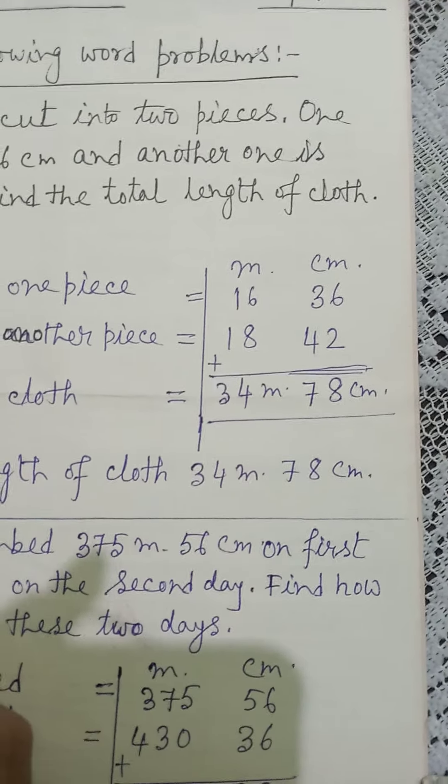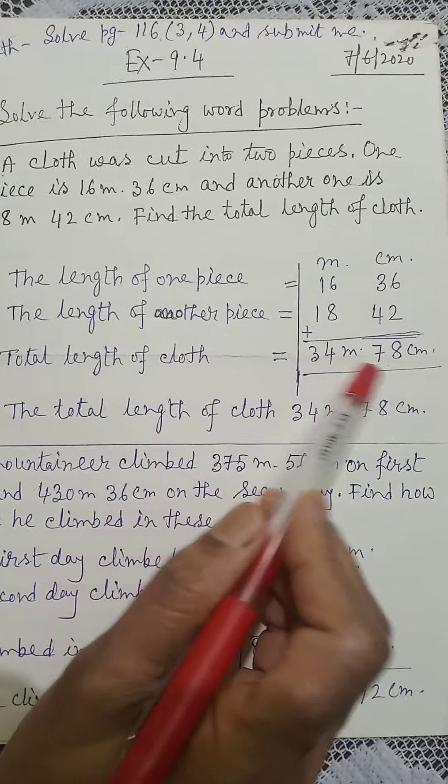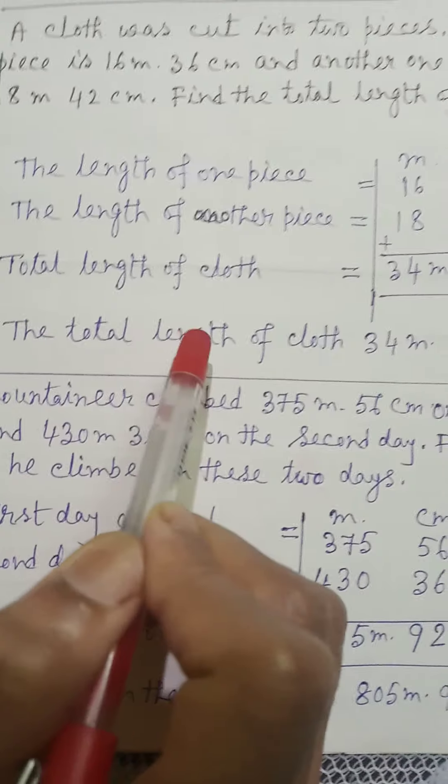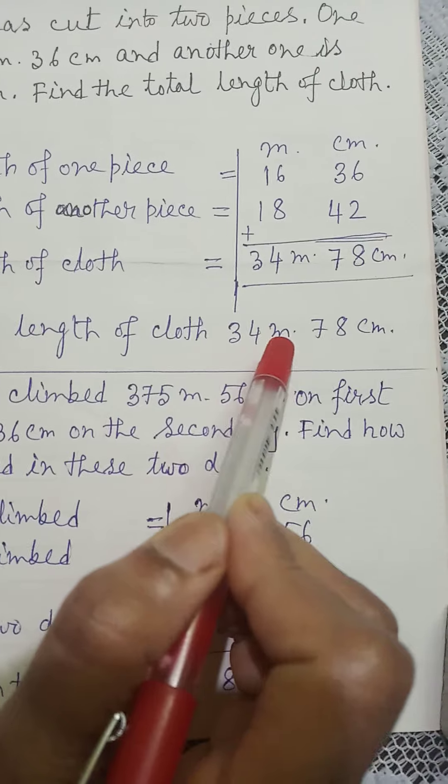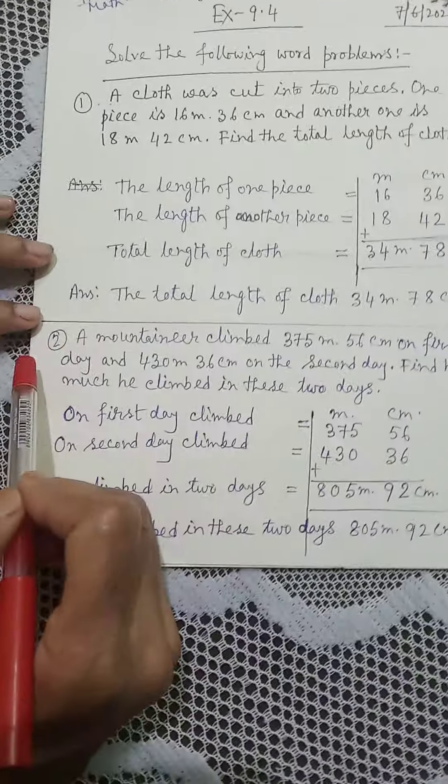Total length of cloth: 34 m 78 cm. Number 2.